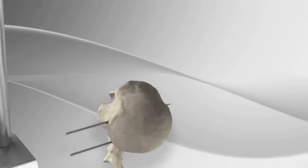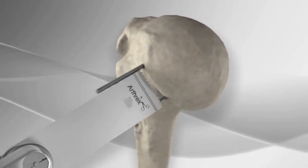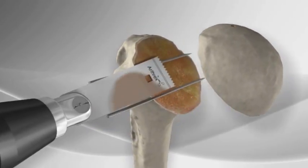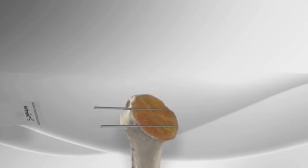The guide is removed and a bone saw is used to cut the humeral head using the pins as a reference. The top portion of the humeral head is removed along with the pins.